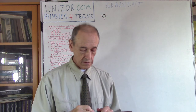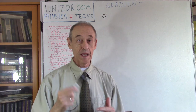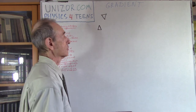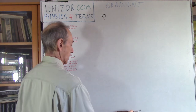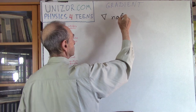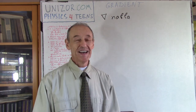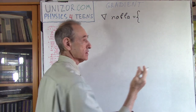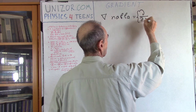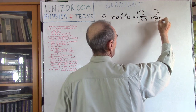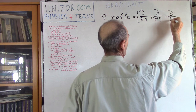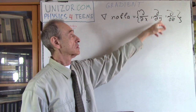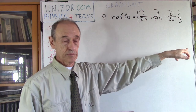It looks like the Greek letter delta upside down — capital letter. The real capital letter is a triangle, that's a delta, capital delta in Greek, and this is just upside down. Usually it's called Nabla. I don't know who invented this particular symbol, but what it means is: Nabla is basically a triplet of operators of differentiation. This is the partial derivative by argument x, this is the partial derivative by y, and this is the partial derivative by z.